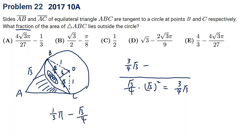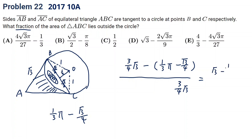Putting the arc region into the formula, we get the fraction of the area outside the circle. Simplifying the numerator by expanding the bracket gives three-fourths root three plus one-fourth root three, so root three minus one-third pi, all over three-fourths root three.